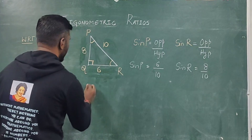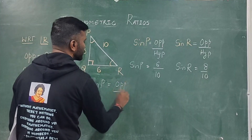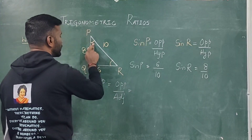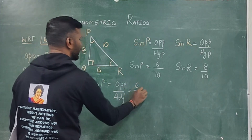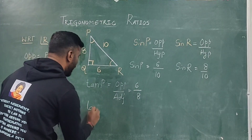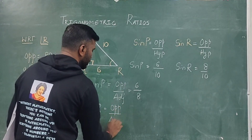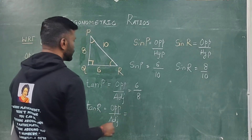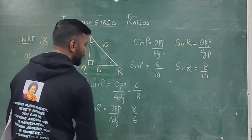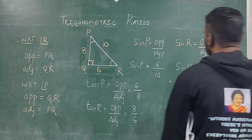What is tan R? Tan R is opposite by adjacent. With respect to R, opposite is 8 and adjacent is 6, so tan R = 8/6. If the angle is given as alpha or theta instead of a letter, the approach is the same. With respect to sin alpha, opposite is 8 and hypotenuse is 10, so sin alpha = 8/10. If you don't pay attention to the specific angle and just write the ratio without substituting correctly, you will only get half marks.